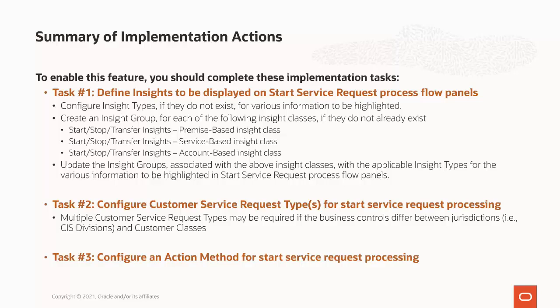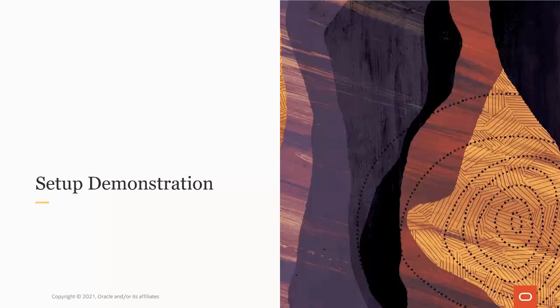Multiple customer service request types may be required if the business controls, configuration options, and or extension points differ between jurisdictions — that is, CIS divisions and customer classes. Finally, you must configure an action method for start service request processing. When initiating a start service request, the solution initially creates a process flow and parent customer service request. The process flow type and customer service request type for these are derived from the action method. This demonstration will show you what you need to configure to enable the Start Service Request Process Flow capability.